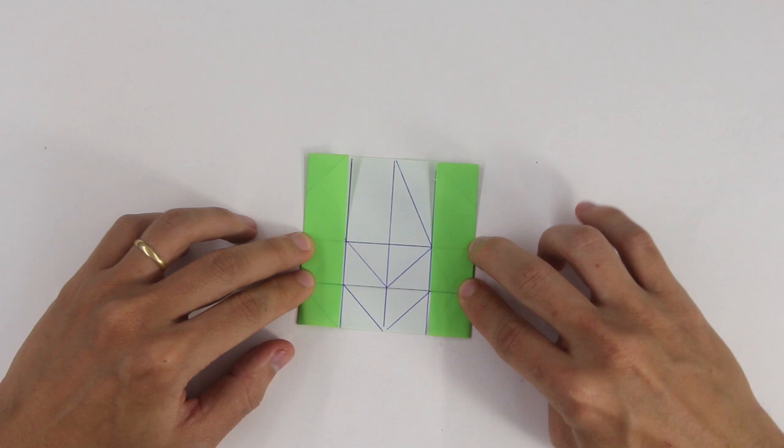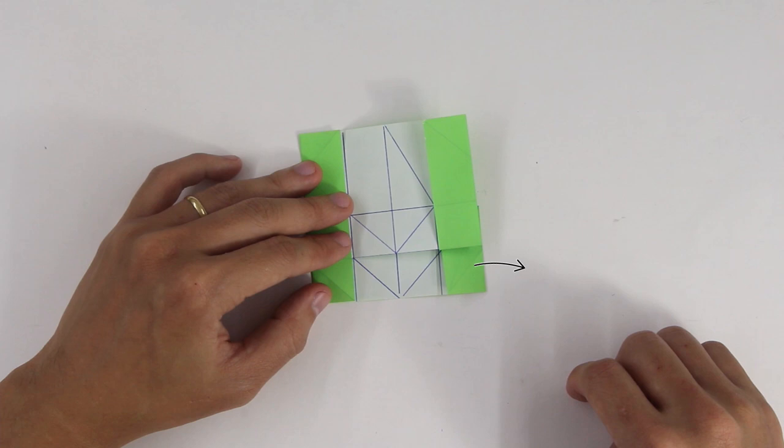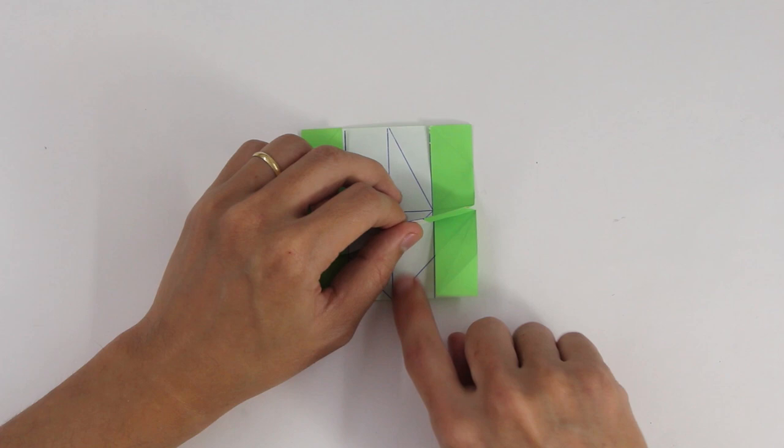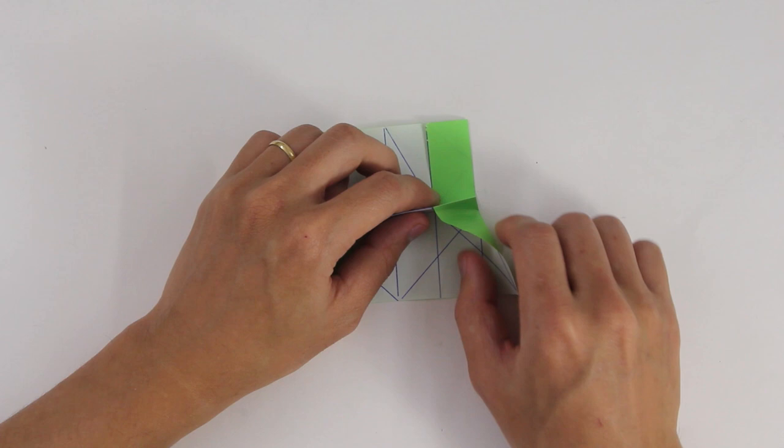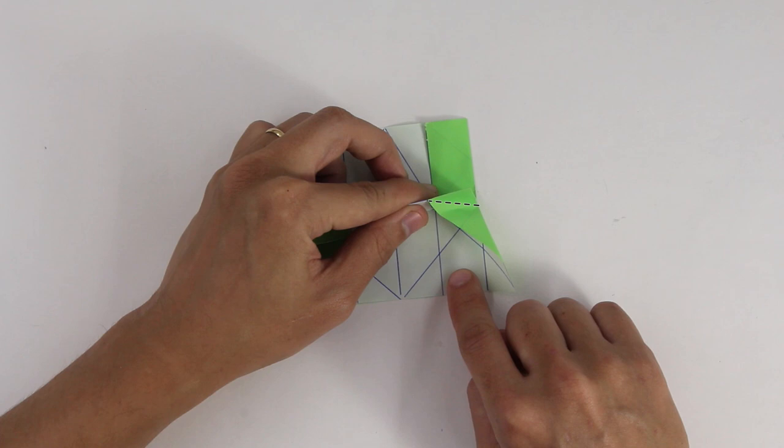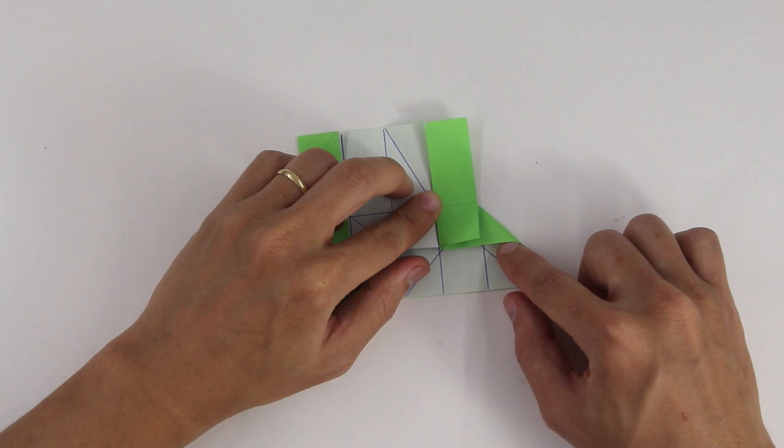Pull one layer from this part to the side. To do it, open this flap a little bit, pull the layer, and you will make this small fold inside. The model will look like this.